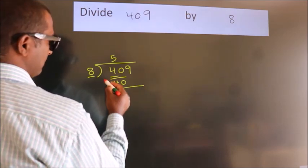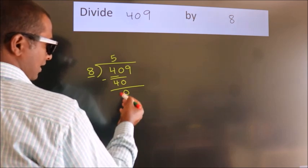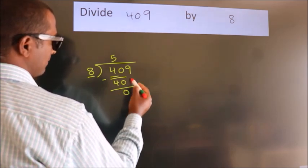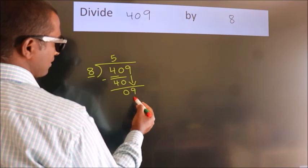Now we should subtract. We get 0. After this, bring down the beside number. So, 9 down. So, 9.